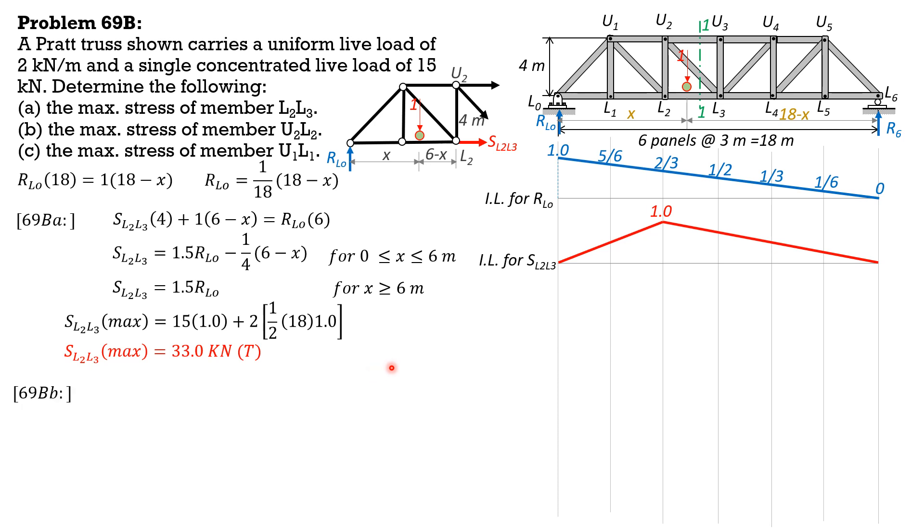For U2L2, let's consider forces to the left of section 22. The free body diagram look like this. And so that these two members here will not be involved in our static equation, the best equation is summation forces Y. SU2L2 plus RLO equals 1. Therefore, SU2L2 equals 1 minus RLO. And that is applicable for 0 less than equal to x less than equal to 6 up to here. The unit load is up to here so that it is still part of the free body diagram. Beyond that, it's no longer part of the free body diagram. So remove 1, SU2L2 would be negative of RLO. And that is when x is greater than 6.